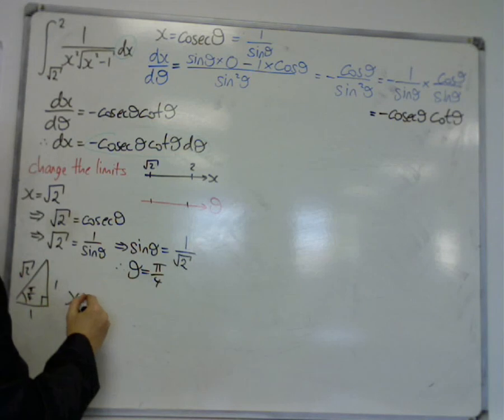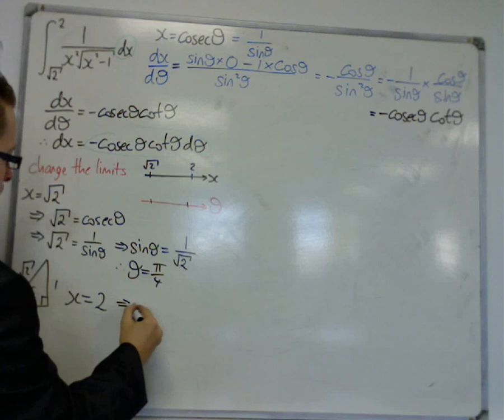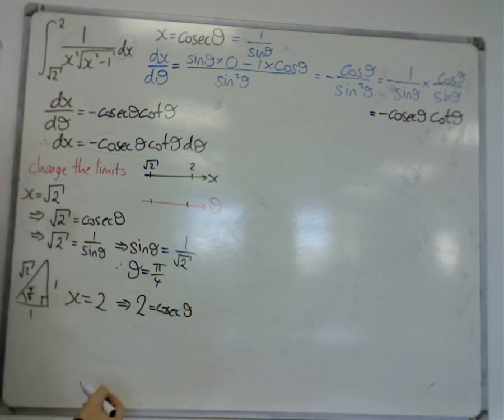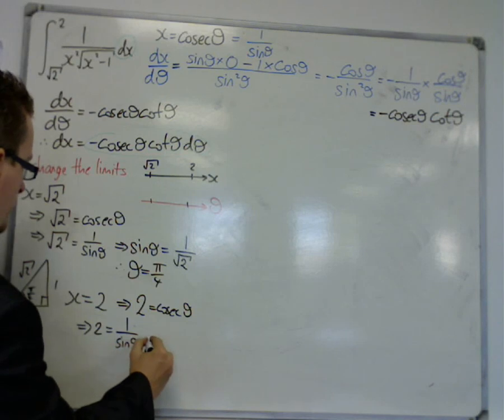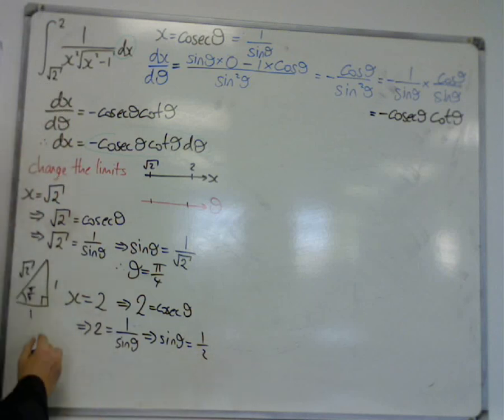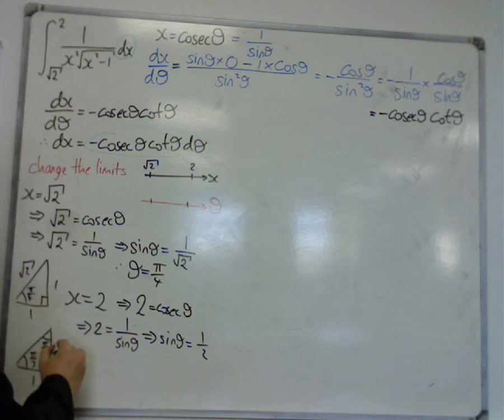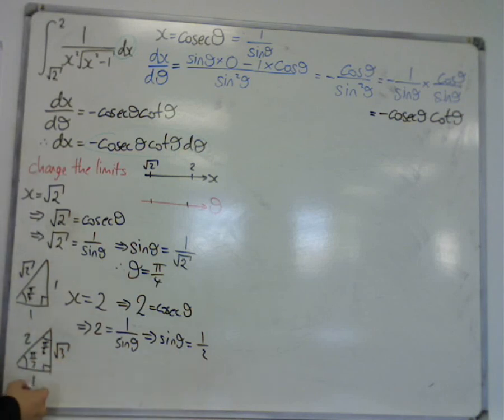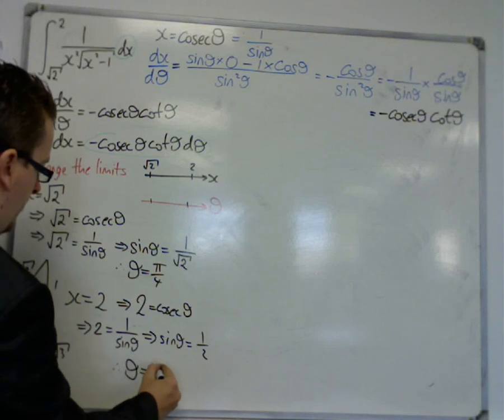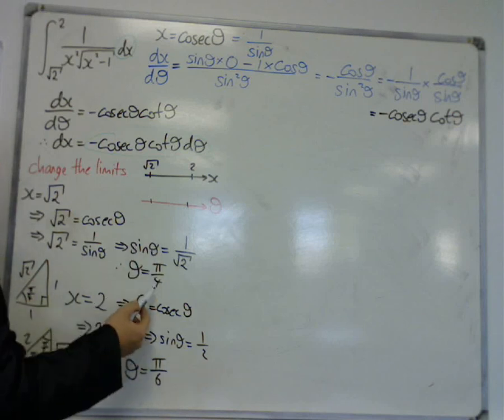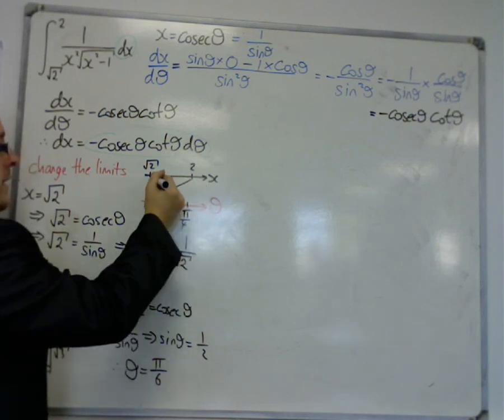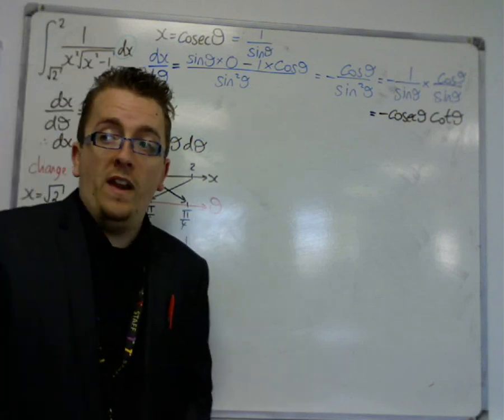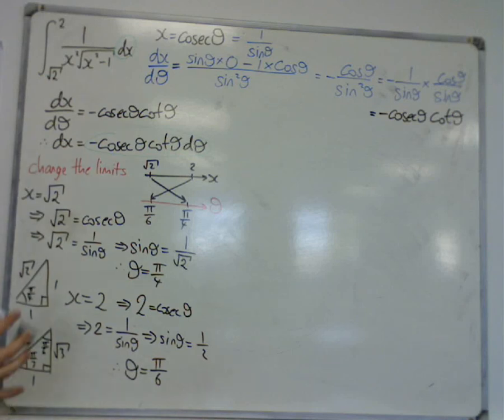And we also have, when x is 2, 2 is equal to cosec theta. So 2 is equal to 1 over sine theta. So sine theta equals 1 half. Now that's using the other triangle. That's pi over 3. That's pi over 6. 1, 2, root 3. So opposite over hypotenuse. So theta is pi over 6. Also, you could have done that using your calculator. Okay? Now pi over 6 is less than pi over 4. So that's pi over 6. That's pi over 4. So 2 is getting replaced with pi over 6. And root 2 is getting replaced with pi over 4. So you'll notice there's been a bit of a flip between the two. Which you need to take into account.